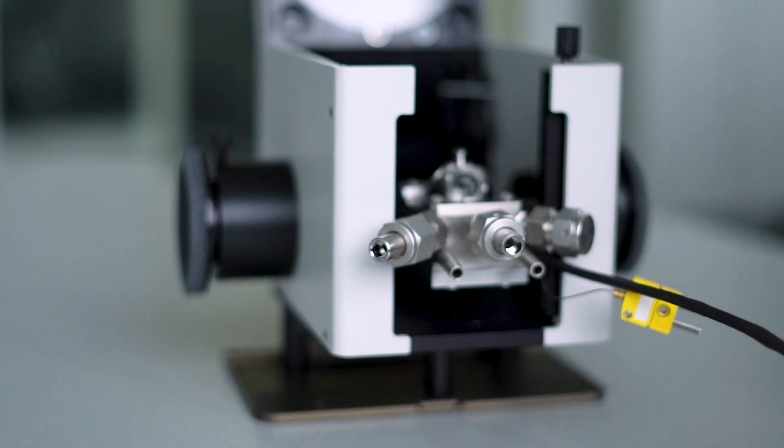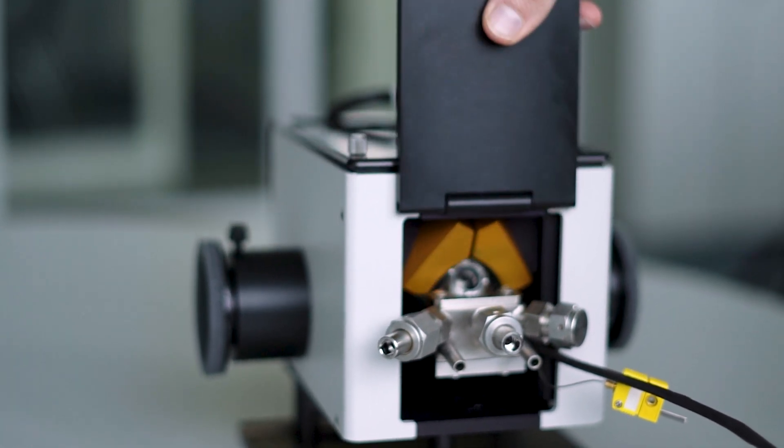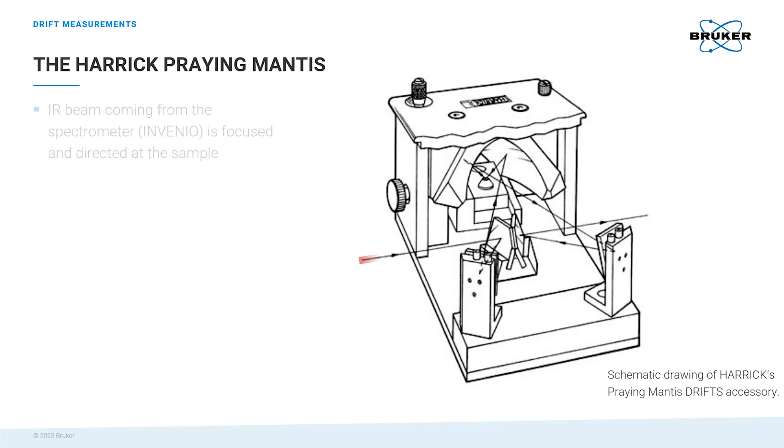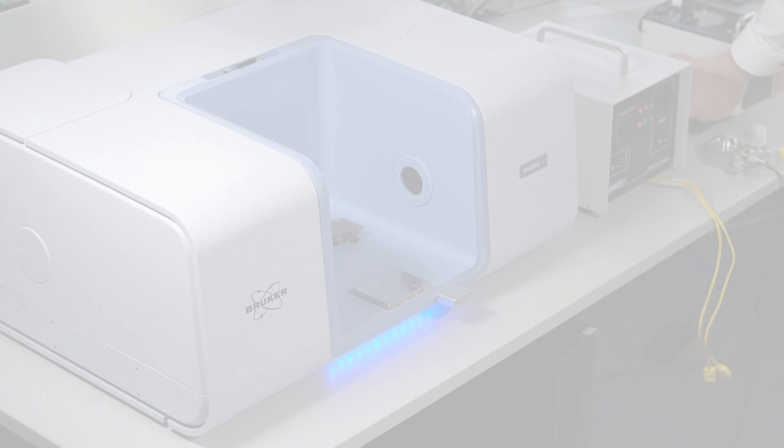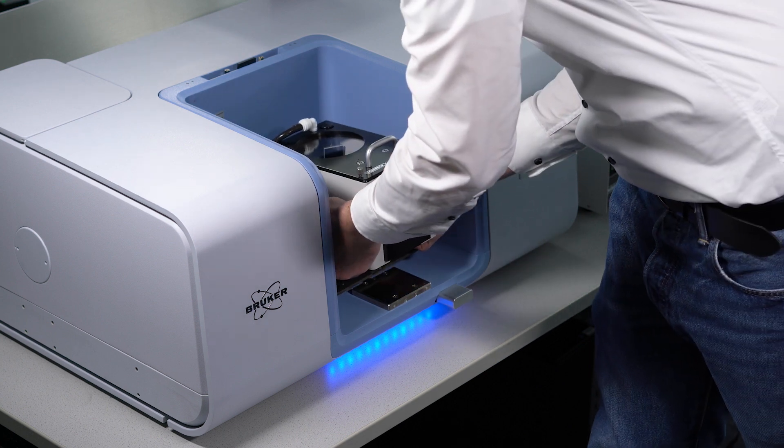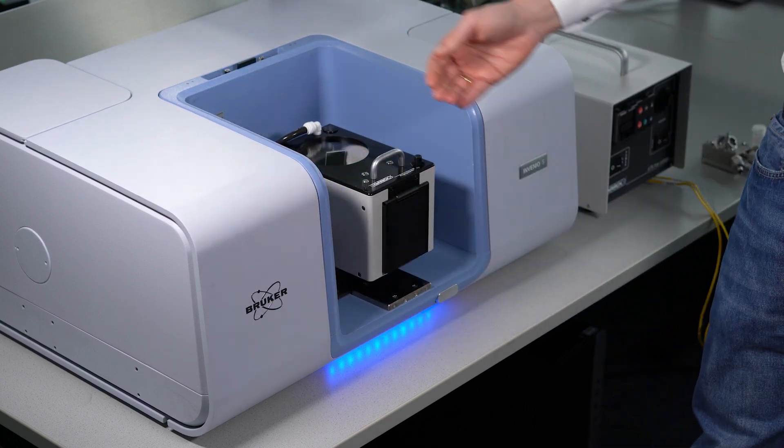The accessory we use for our DRIFTS measurement is the Praying Mantis from Harrick. It focuses the incident beam coming from the spectrometer onto the sample, collects the diffusely reflected light containing the chemical information and guides it back to the Invenio. Let me get the accessory and put it into the spectrometer. This big window on the top can be used for observation.